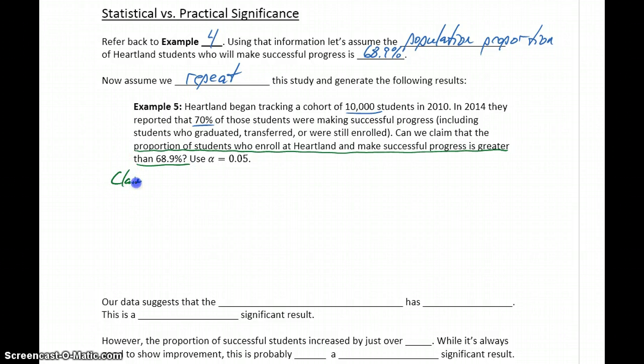So in this case, our claim is that P is something greater than 0.689. Meaning our null and alternative hypotheses will be P equals 0.689 and P is greater than 0.689. So we could verify the conditions. In this case, we would end up having 7,000 successes, 3,000 failures. Turn back to StatCrunch to generate our results and test this claim. But what we would get is a p-value of 0.0087, which is less than 0.05, which is our significance level in this case.